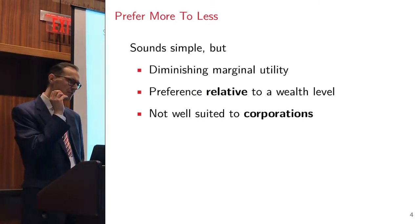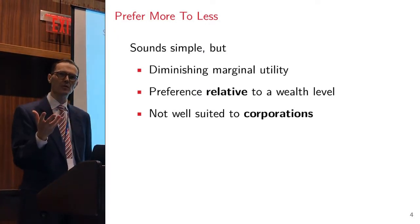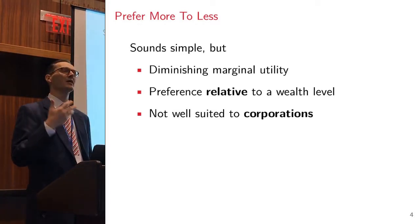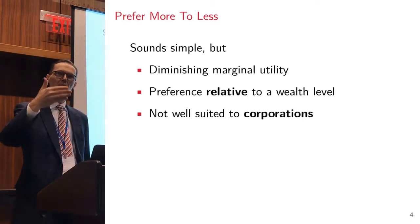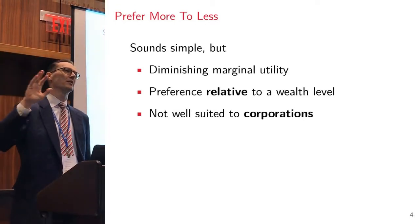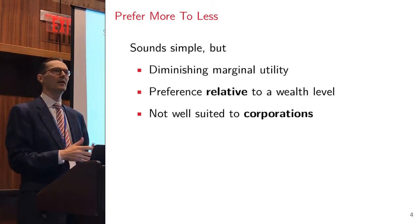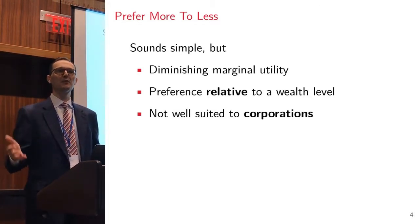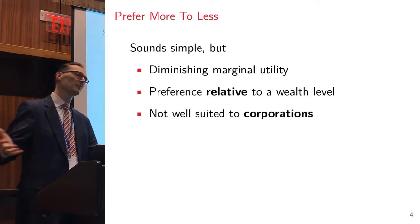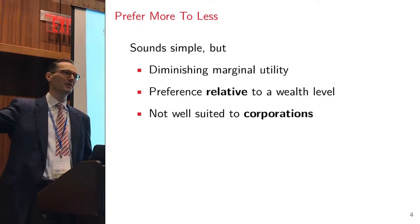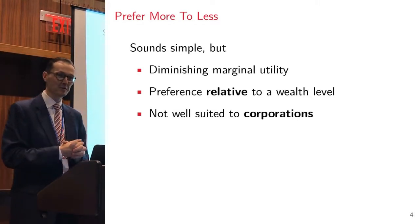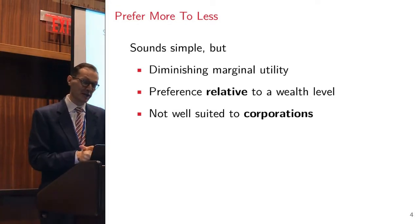When we think of preferring more to less as individuals, we typically have this idea of diminishing marginal utility. If I give you a lot of something, each additional unit is worth less and less to you. Eventually, the difference between a 20,000 and 21,000 square foot house, who cares at that point.